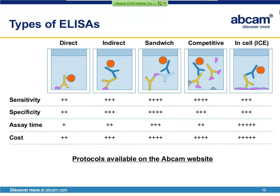Sandwich ELISA is so-called because target is sandwiched between a capture antibody bound to the well and the detecting antibodies. The sandwich ELISA assay is considered even more sensitive and specific than an indirect ELISA. The extra degree of specificity is due to the fact that two different antibodies need to bind to the same target. Sensitivity is enhanced as well, because each capture antibody will bind target molecule even if the molecule of interest is present as a very small percentage of the total sample.